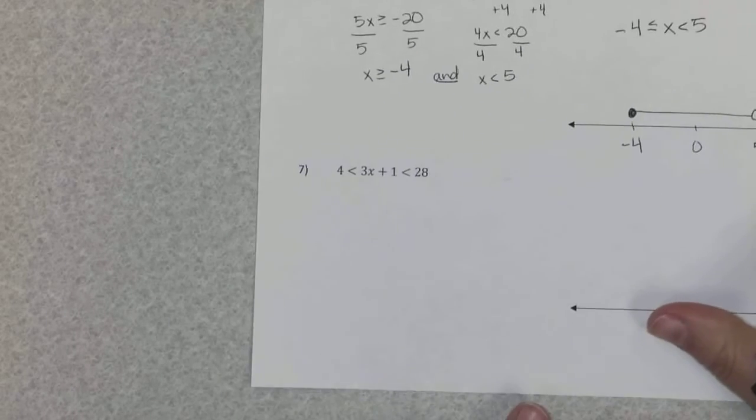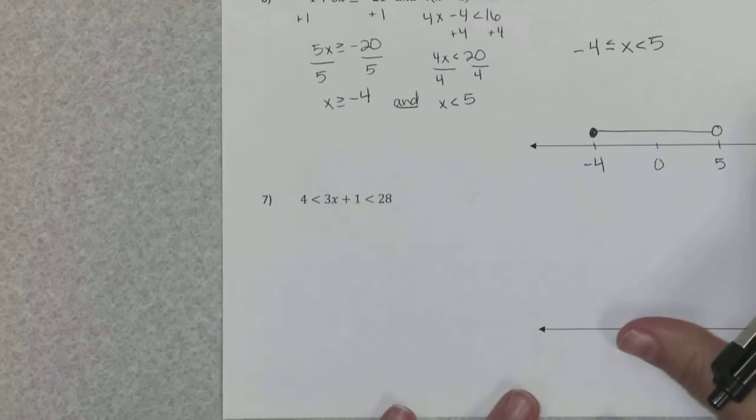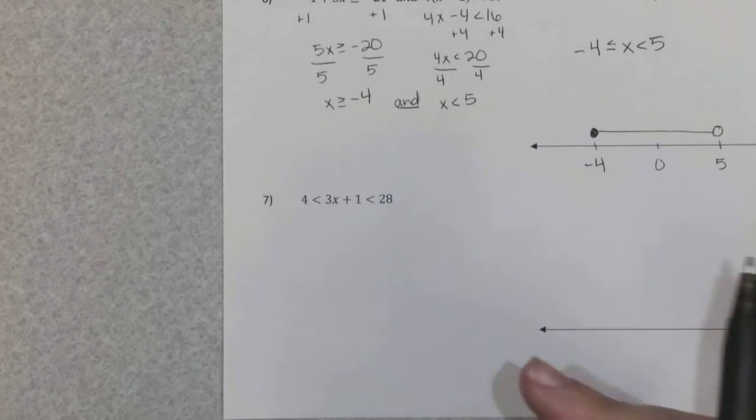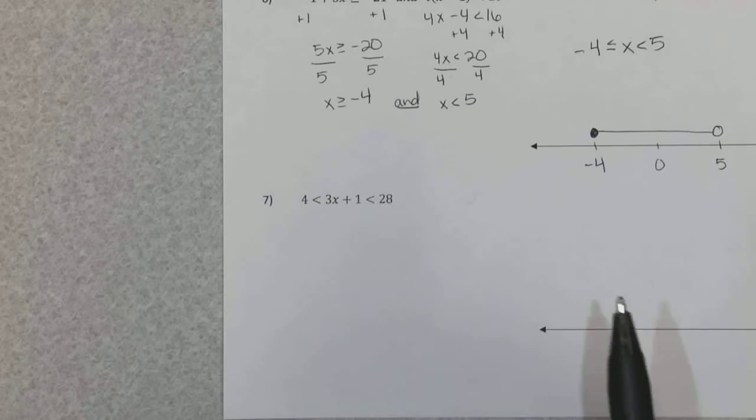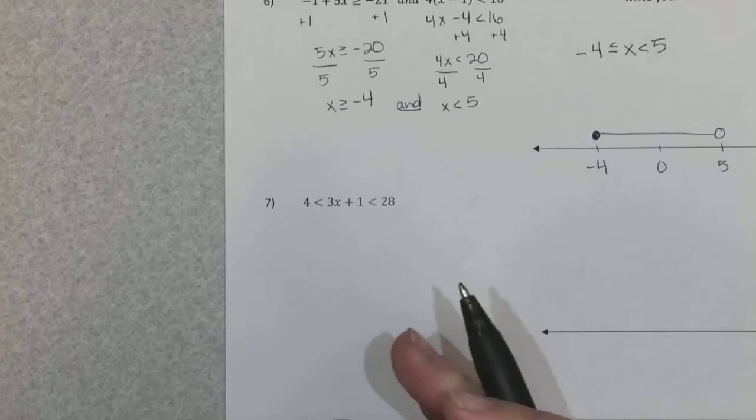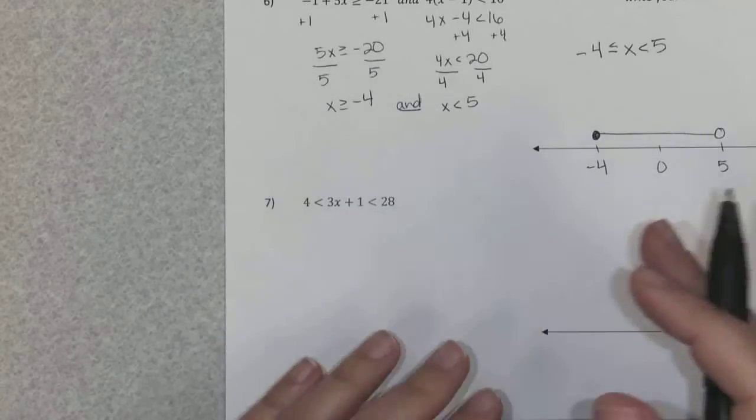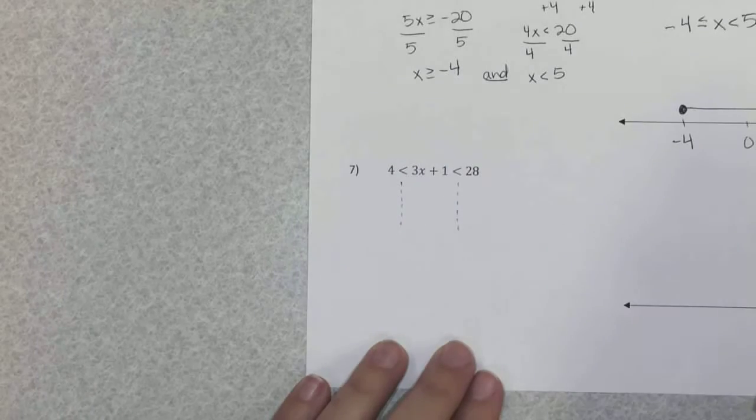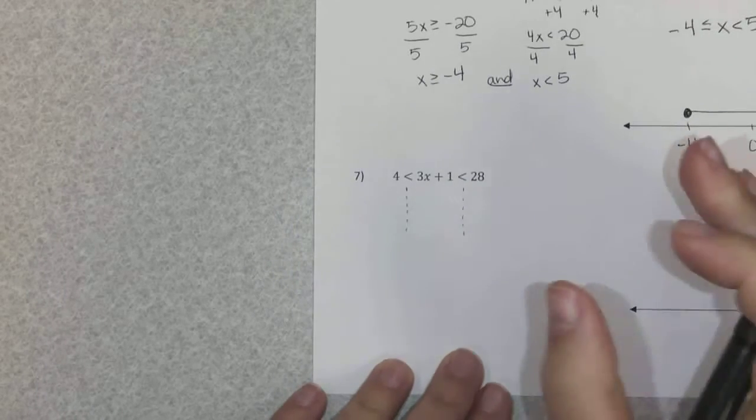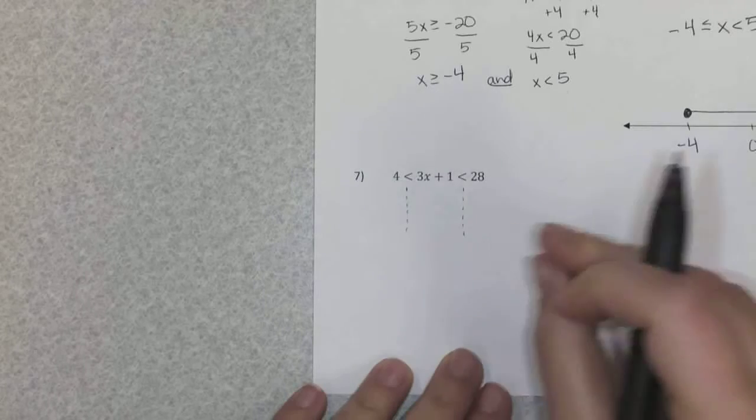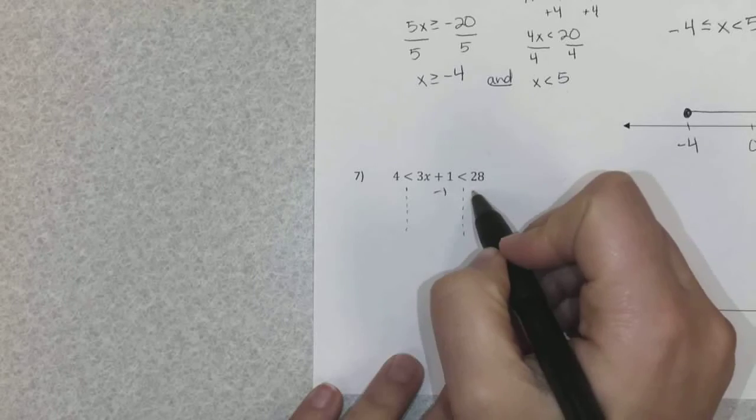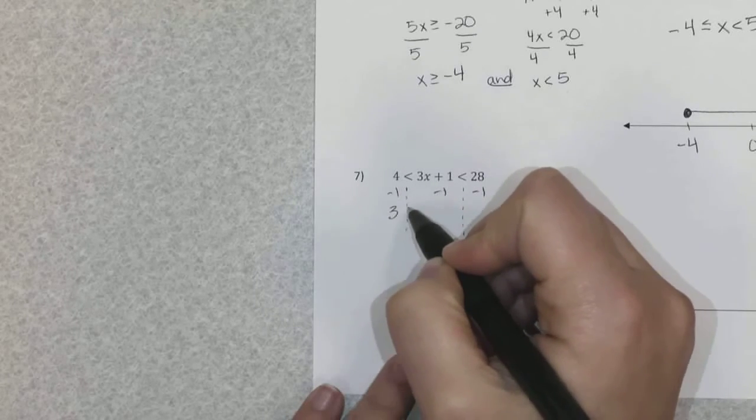Okay, so then we get to number 7 here. The problem is given in compact form. There are a couple different ways you can go about solving this. I typically tell students just to leave it as it is and solve for your variable in the middle. So you can think of it as you've got three sections here that you're working with, and whatever operation you do in the center you have to do on both sides or all three sections as well. So when I subtract 1, I'm going to do that three times.